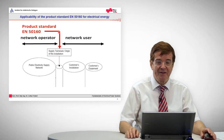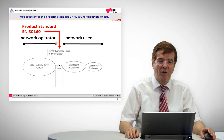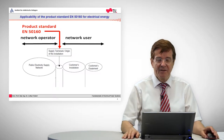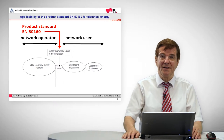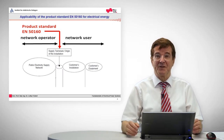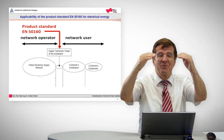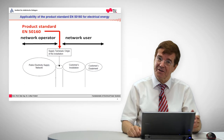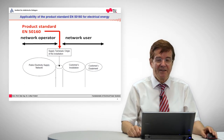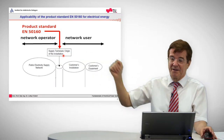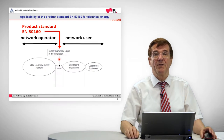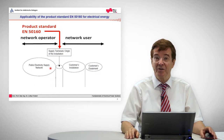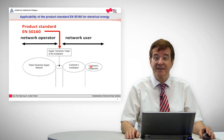There are two sides to power quality. One is the network operator, the other is the network user. There is a common rule that says the network users determine the quality of the power, because for example if we switch on a heavy load, the voltage will have a little dip. This is felt by all other consumers as a dip in their voltage, which is a feature of power quality. The supply terminals are the limit and the point where power quality is defined and measured — on one side the public electricity supply network, on the other the consumer's installation and equipment.